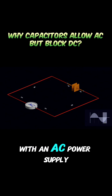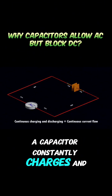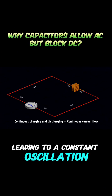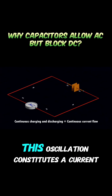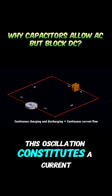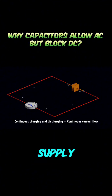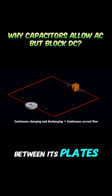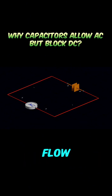With an AC power supply, a capacitor constantly charges and discharges, leading to a constant oscillation of charges. This oscillation constitutes a current flow. So, with an AC power supply, a capacitor has charges oscillating between its plates, resulting in a continuous current flow.